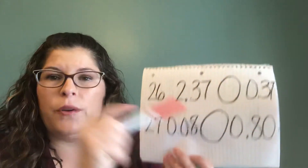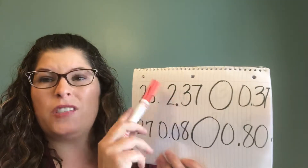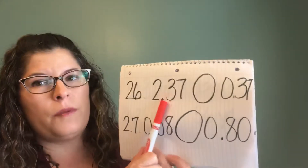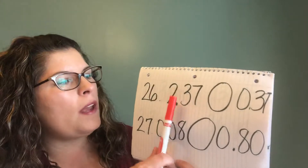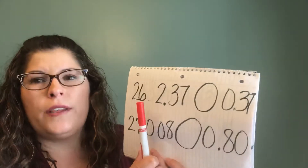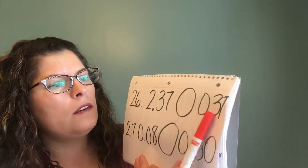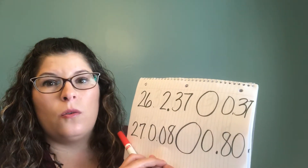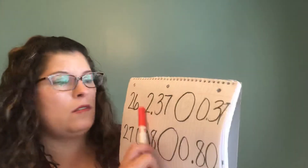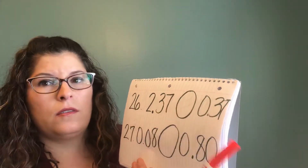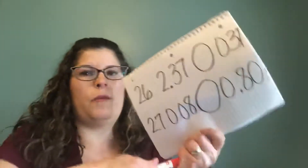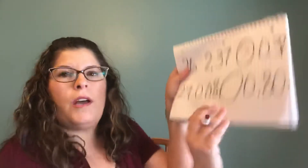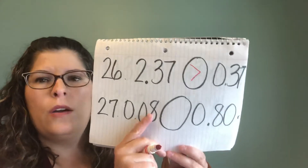The best way to figure it out is to start by saying the words of what the decimal is. So two and — remember if there's a decimal point, we say 'and' — two and thirty-seven hundredths, or thirty-seven hundredths: which is more? Well, the decimals are the same, but that two means it's more. You can make an alligator mouth, and that alligator is going to want to eat the bigger number.